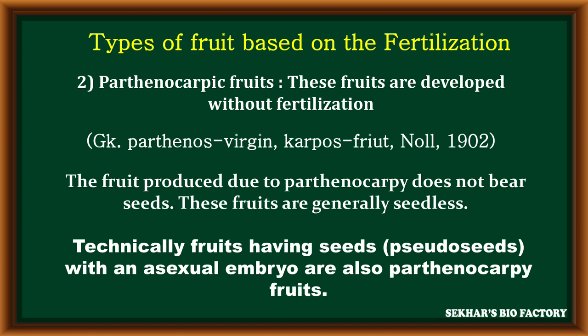Technically, fruits having seeds — especially in banana, at the center some black-colored dots can be observed; these represent seeds, but they are pseudo-seeds. In this fruit, an asexual embryo is present. The entire structure is called a parthenocarpic fruit.